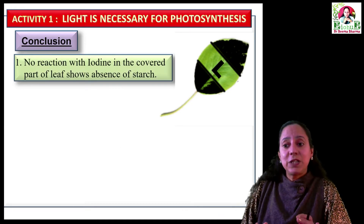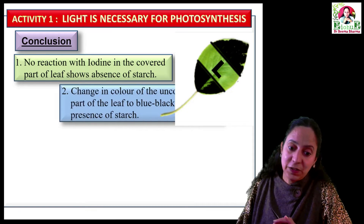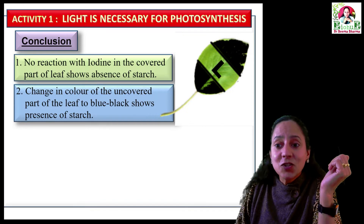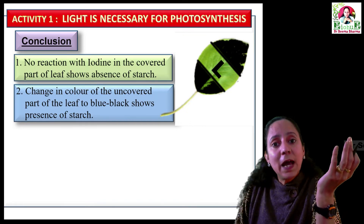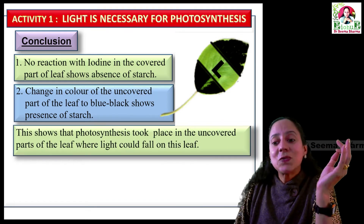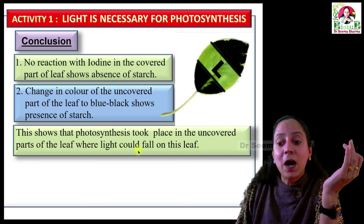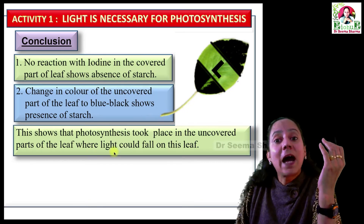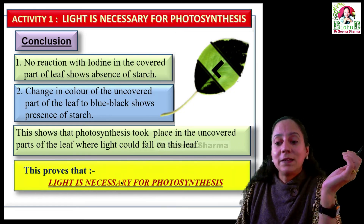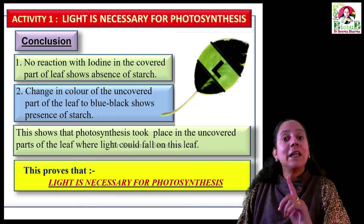On the basis of these observations we can conclude that no reaction with iodine in the covered part of the leaf shows absence of starch, whereas the change to blue-black color in the uncovered or exposed part shows presence of starch. This clearly shows that photosynthesis took place in the uncovered or exposed parts of the leaf where light could fall. With this activity we can prove that light is necessary for photosynthesis.